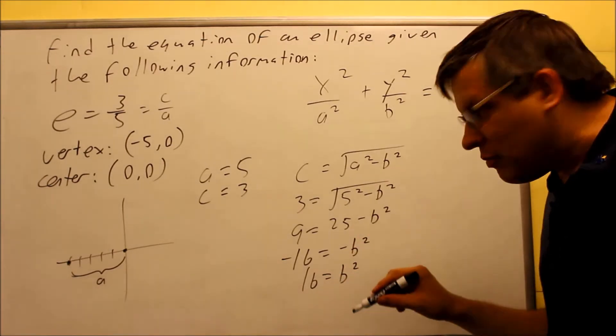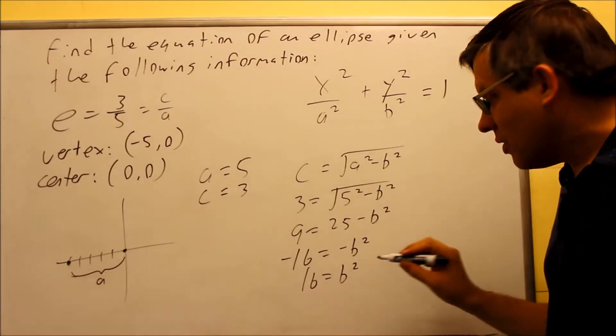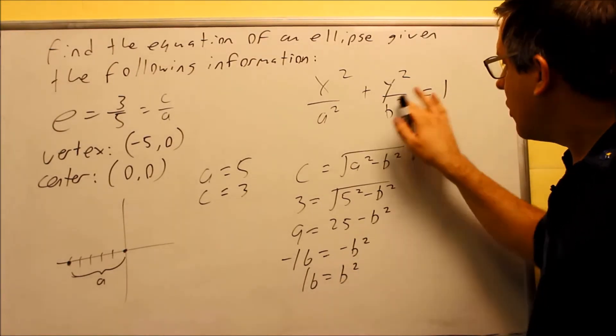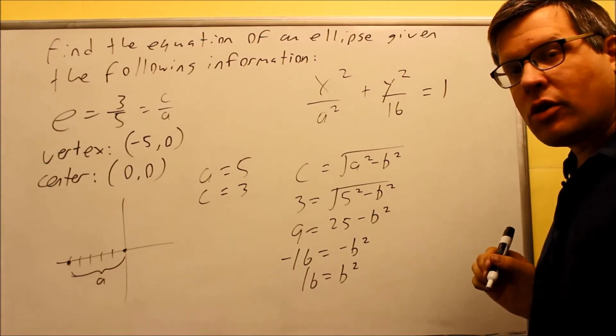I don't need to actually solve it all the way down and get b equals 4, because I'm just going to come back and fill in the pieces of information. I solve for b squared.